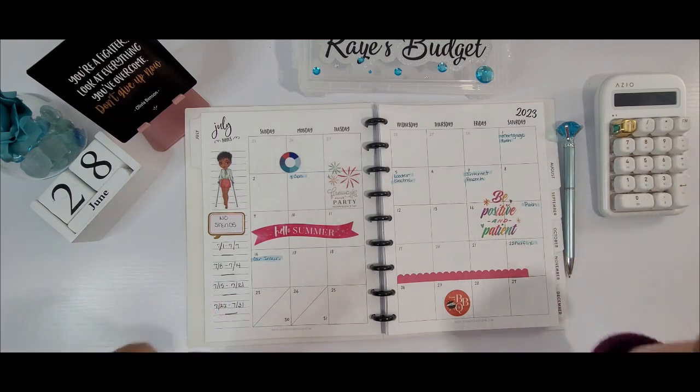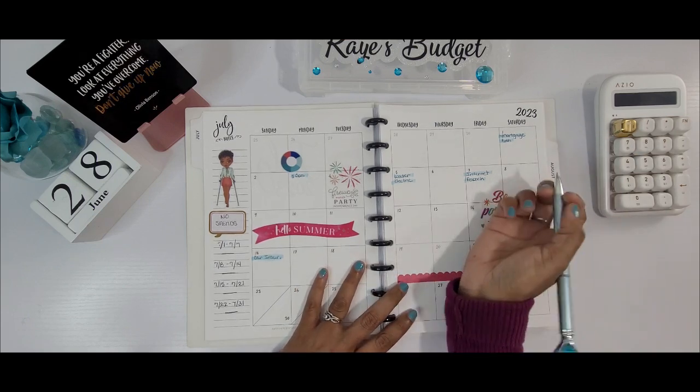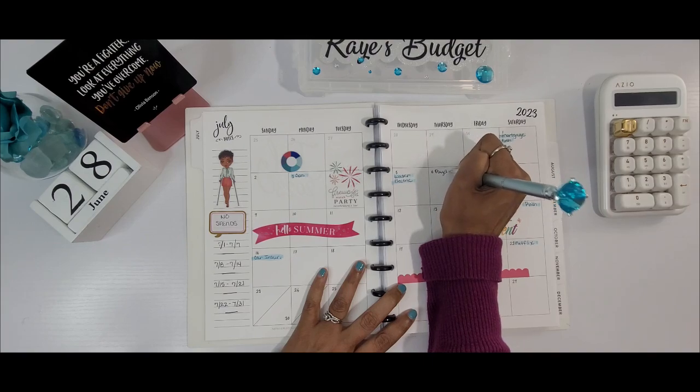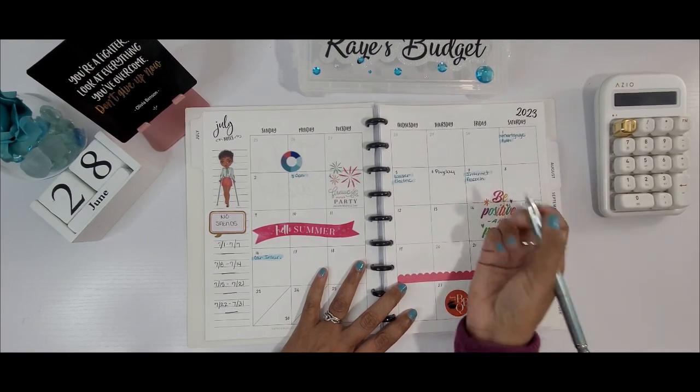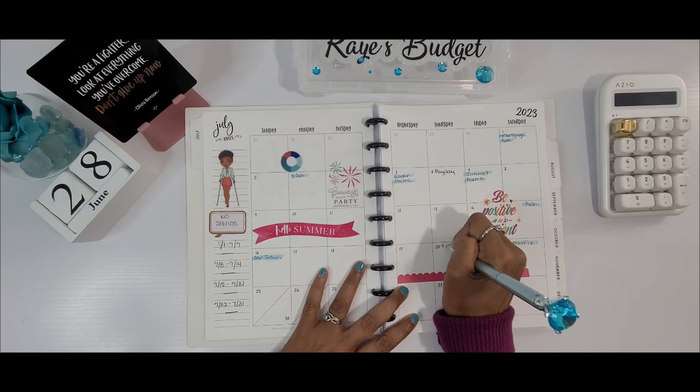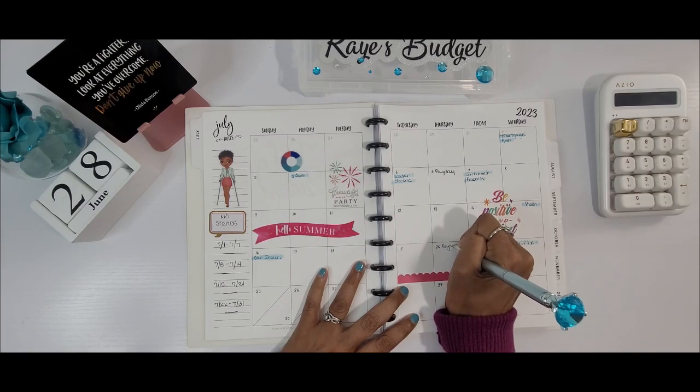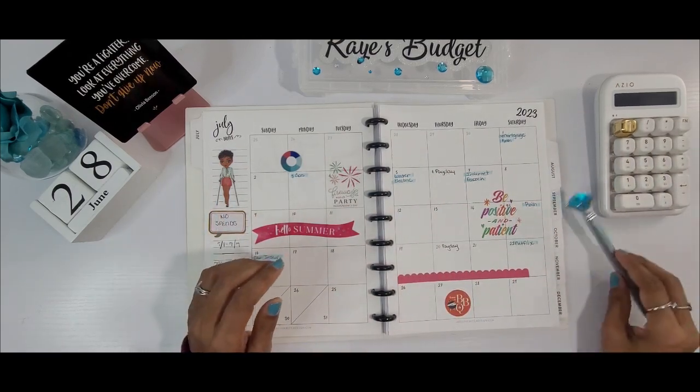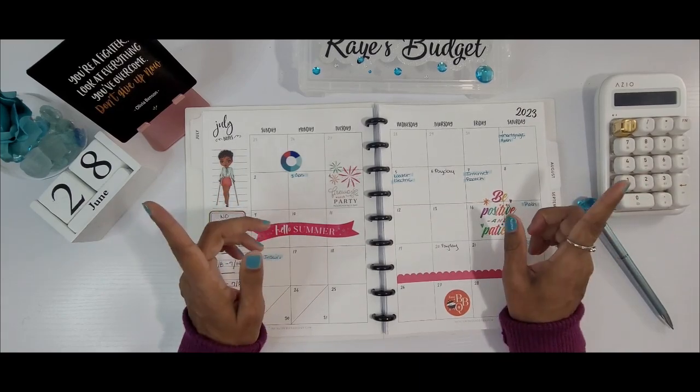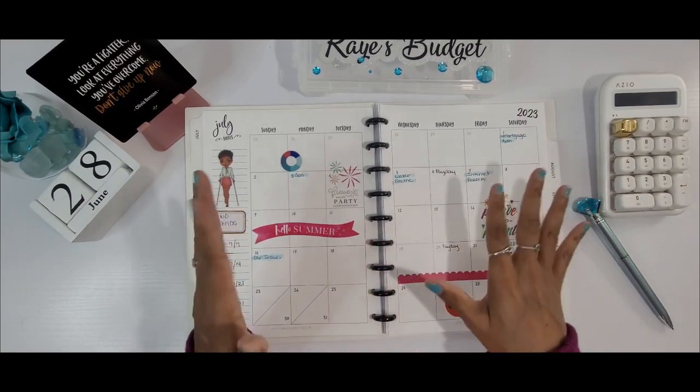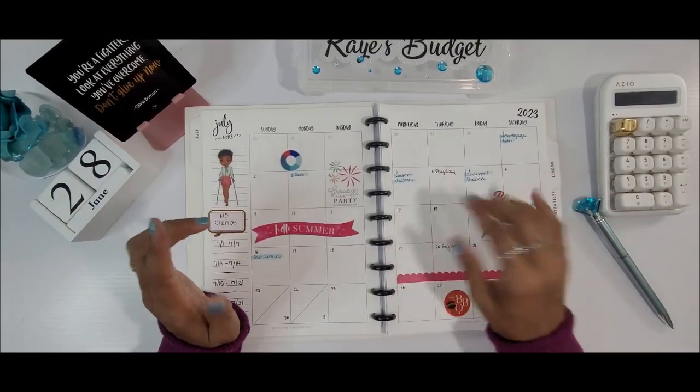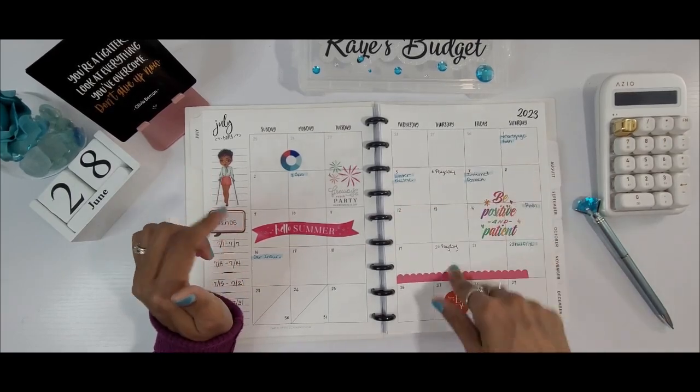I see now that I did not write on here when my paydays are going to be, so let me write that down real quick. My first payday is going to be the 6th and then my second payday is going to be on the 20th. I don't put my husband's on here because when he gets paid he gives me all the money that he needs to contribute to not only our bills and all of that stuff, but our savings and all of that good stuff as well.